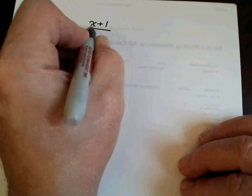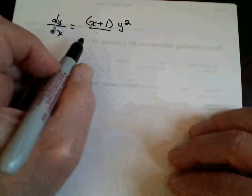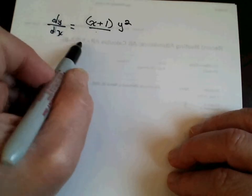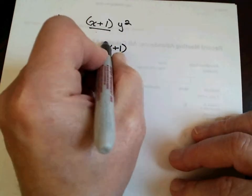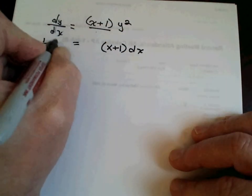Let's say dy/dx is equal to x plus 1 over y squared. The easiest way to do it — if you think about dy/dx, you can multiply both sides by dx and divide both sides by y squared. Now we're left with x plus 1 dx is equal to 1 over y squared dy.